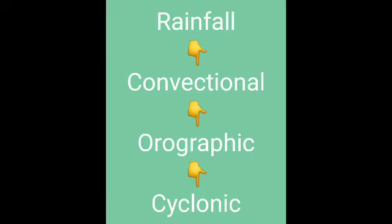Next, we saw about rainfall. Rain occurs where the droplets in the clouds become too heavy to remain in the clouds — that is called rainfall. There are three types of rainfall: convectional rainfall, orographic rainfall, and cyclonic rainfall. Convectional rainfall: the sun heats the ground, warm air rises, it cools and condenses to form clouds. This includes thunder and lightning.